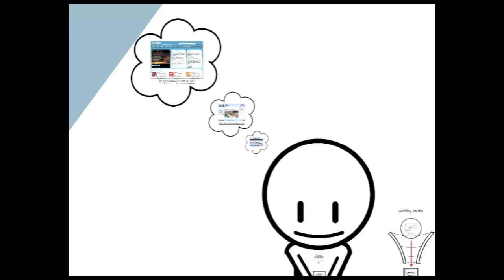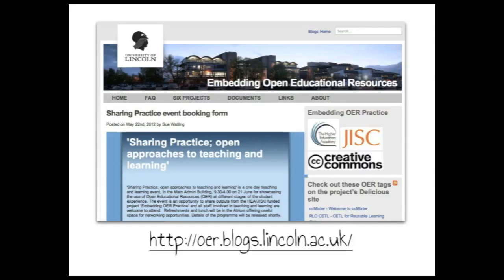Bob has some choices. Choice number one, he can spend all night reinventing the wheel creating resources. Or he can do a smarter thing and get onto the internet to see if there are any ready-made resources he can drop in. There are hundreds of websites that let you do this. The first is the Lincoln OER blog — a fantastic blog being dutifully maintained by Sue and her colleagues, showcasing all the good work going on at this university with OER. If you're a visitor from outside the institution, check this blog out, it's wonderful.